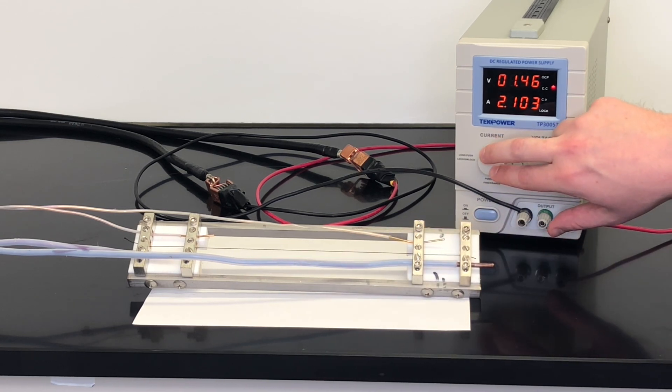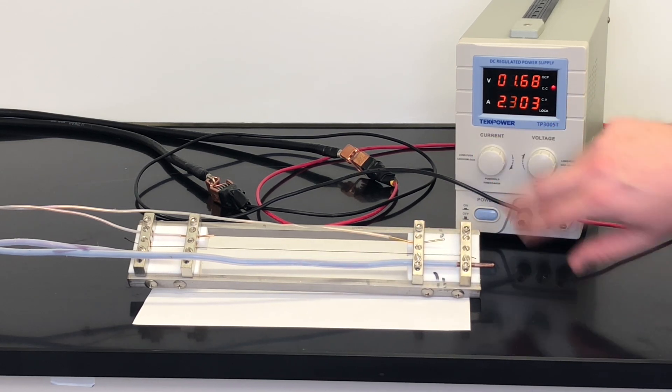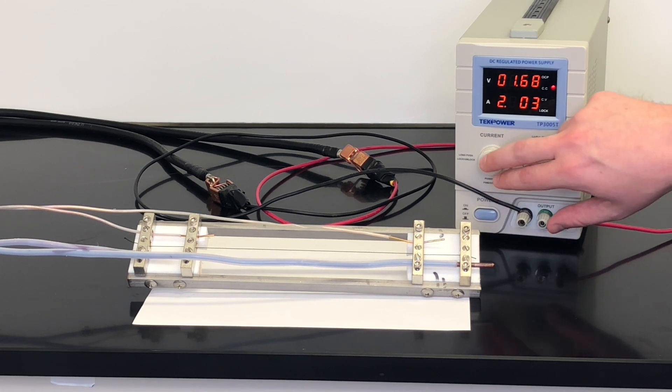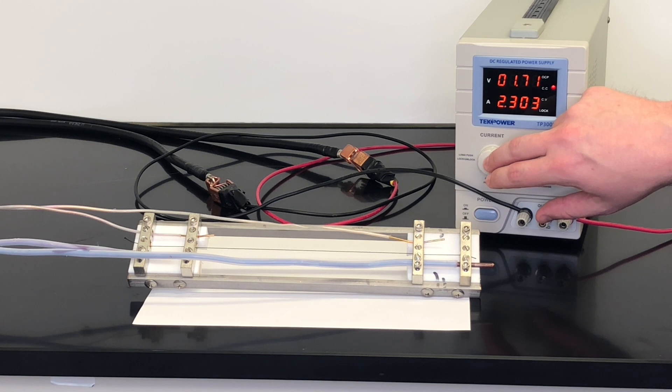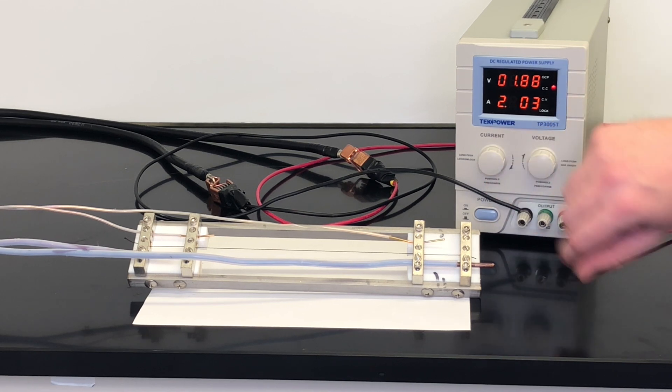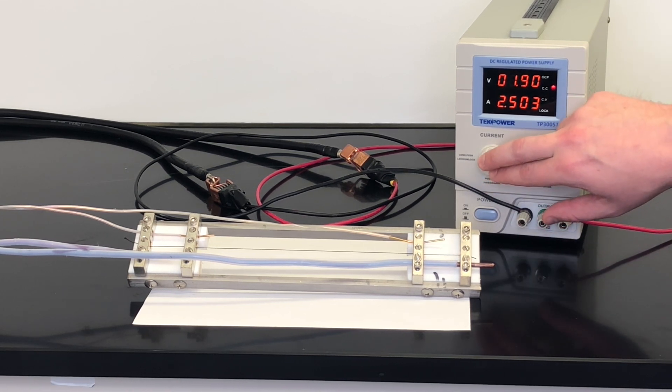I'll now increase the current until we find the value at which this length of yarn in this apparatus in this environment will begin to fail. I'll increase the current by about 100 milliamps or 200 milliamps at a time. As you can see the voltage increases every time I increase the current, but then remains stable, at least for the first few steps. There are some fluctuations due to air currents.